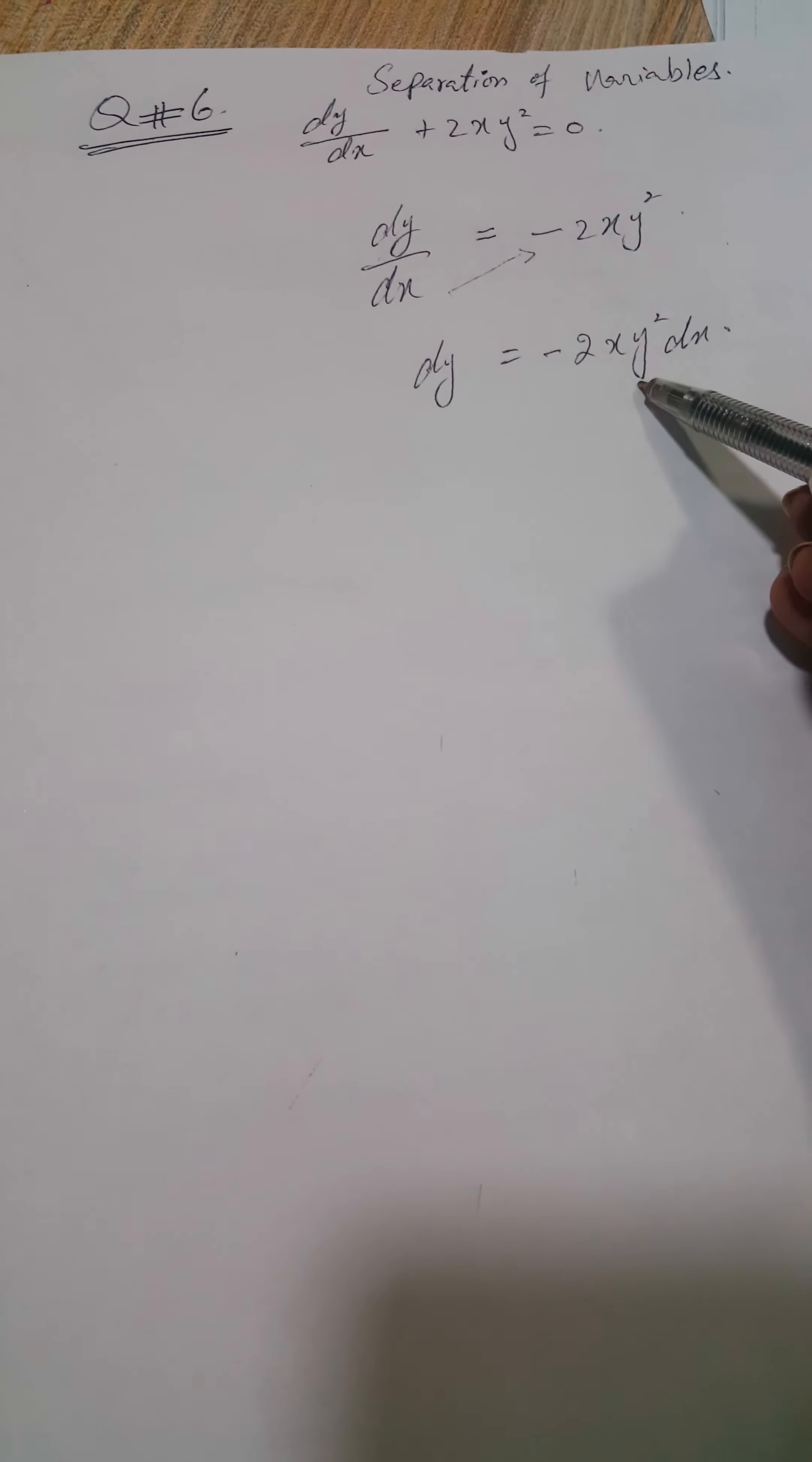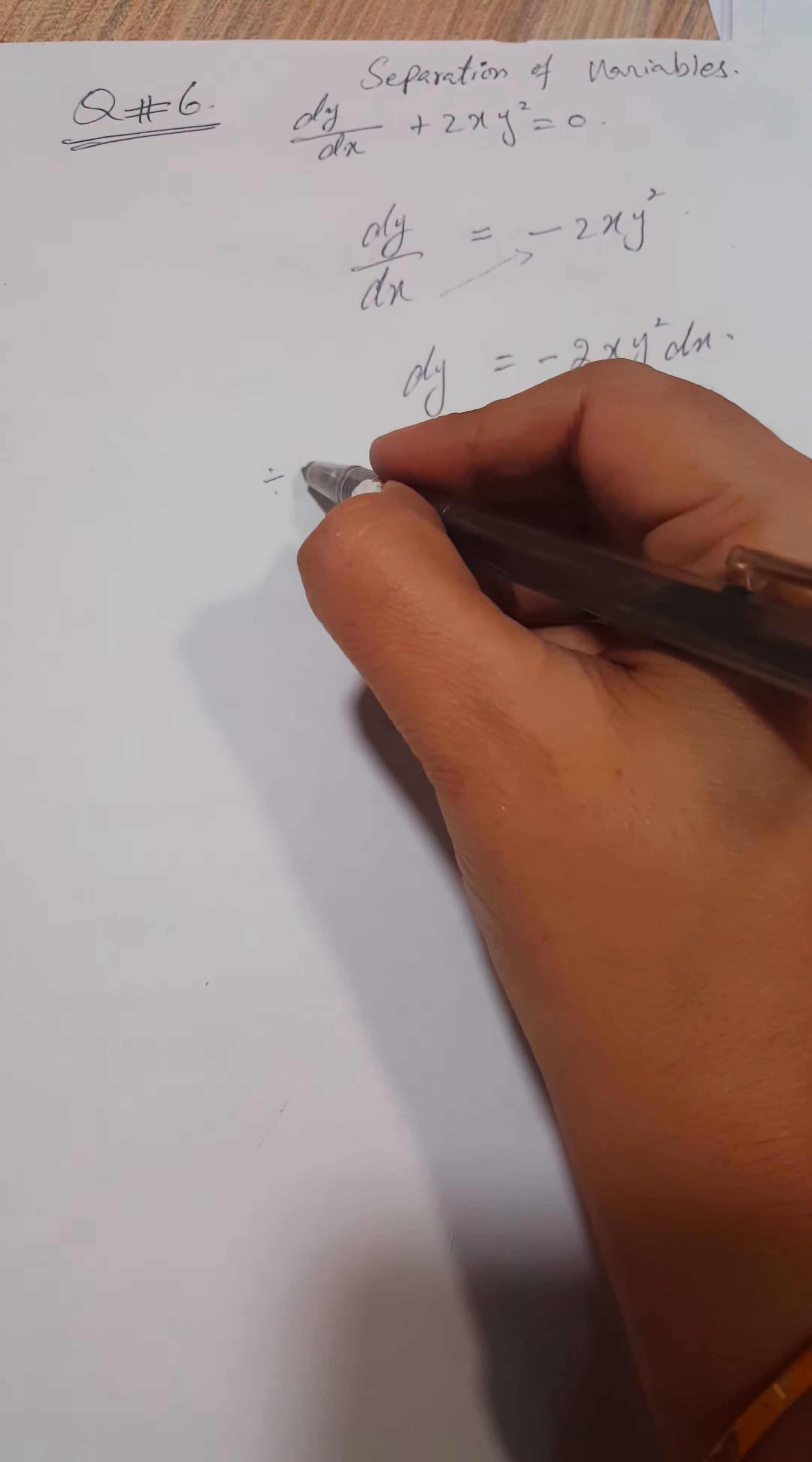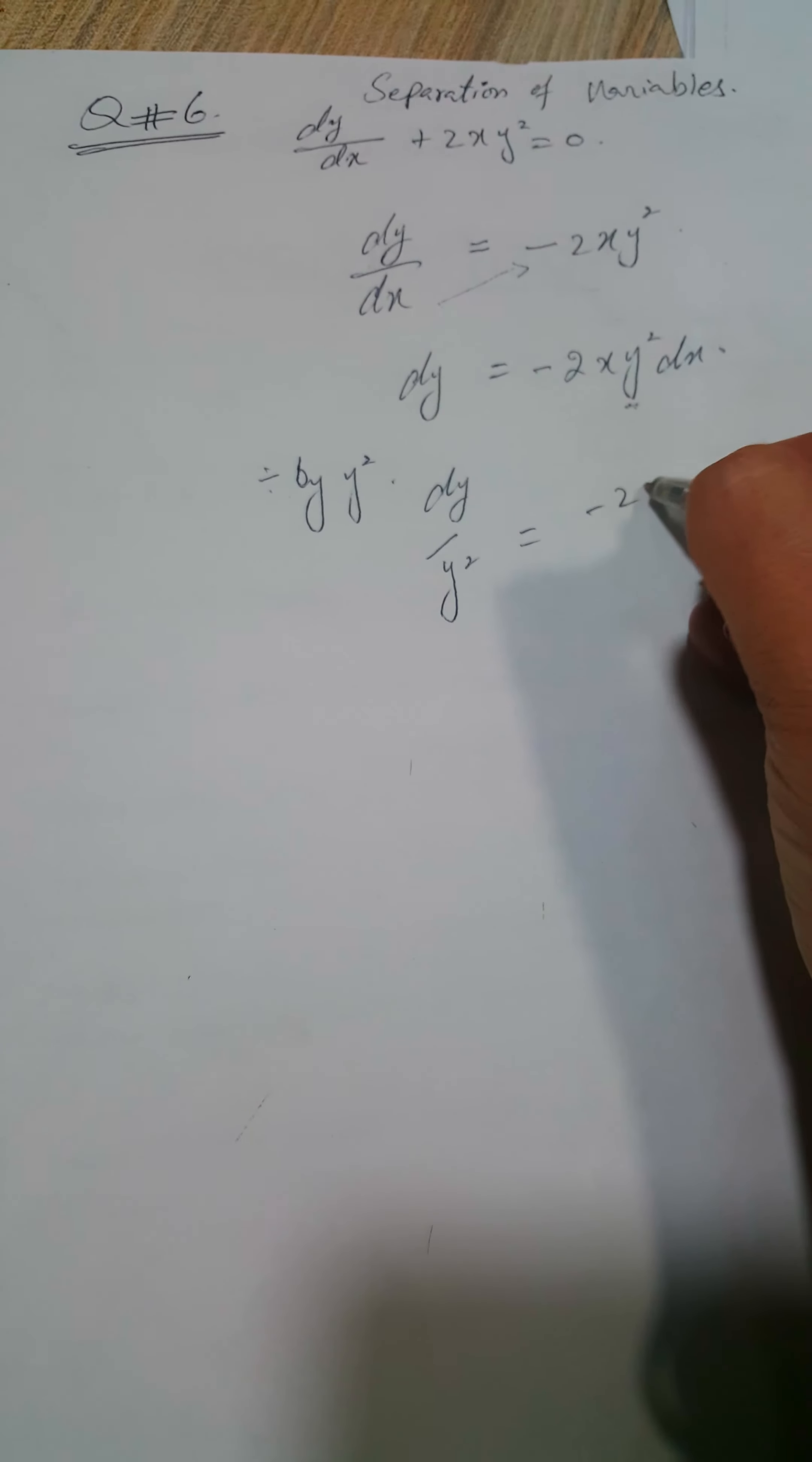Now on the right hand side, the y² is extra because all variables related to x should be on the right side and y variables should be on the left side. So dividing by y² on both sides: dy/y² = -2xy²/y² dx.